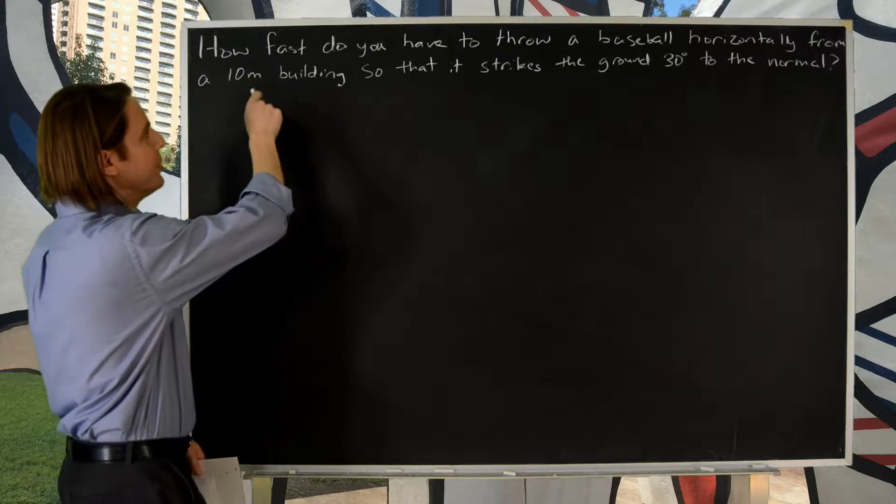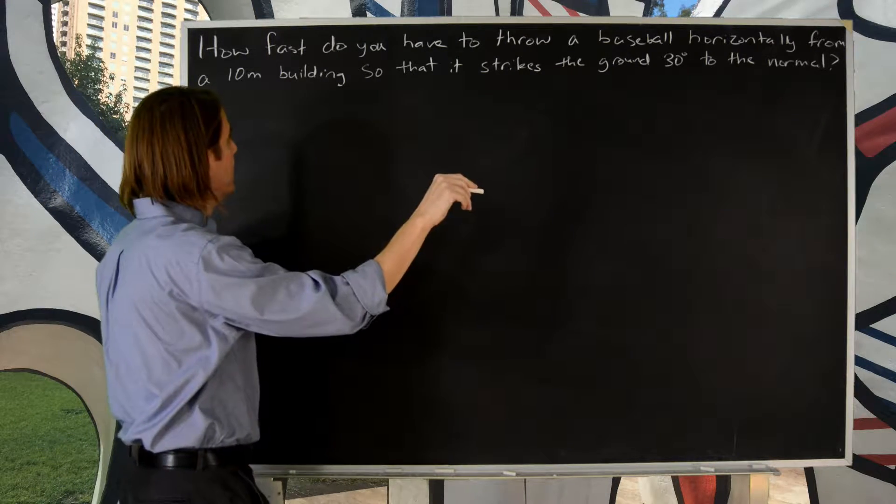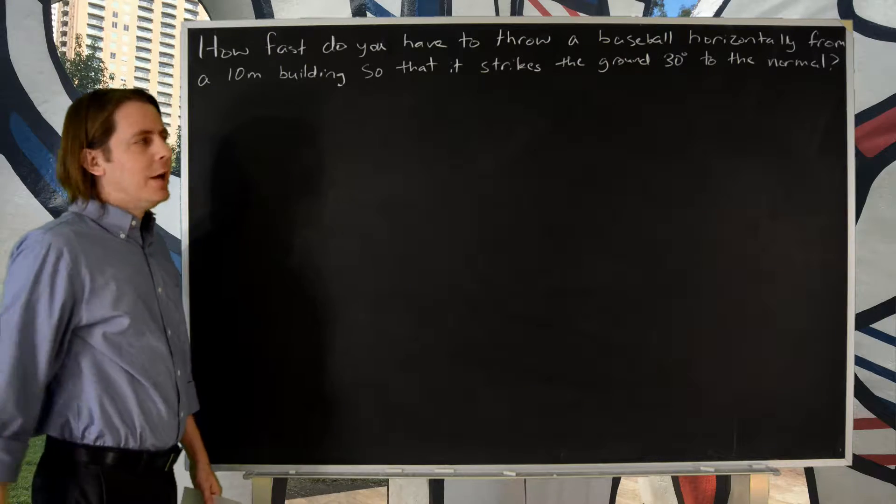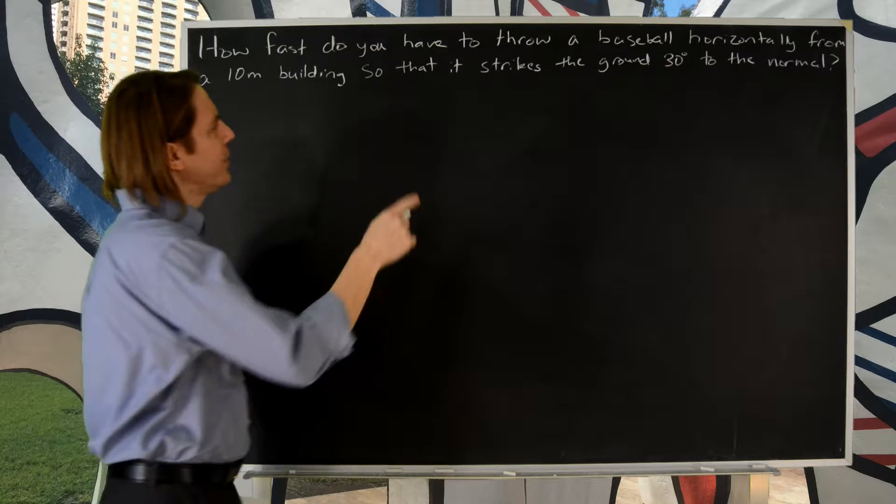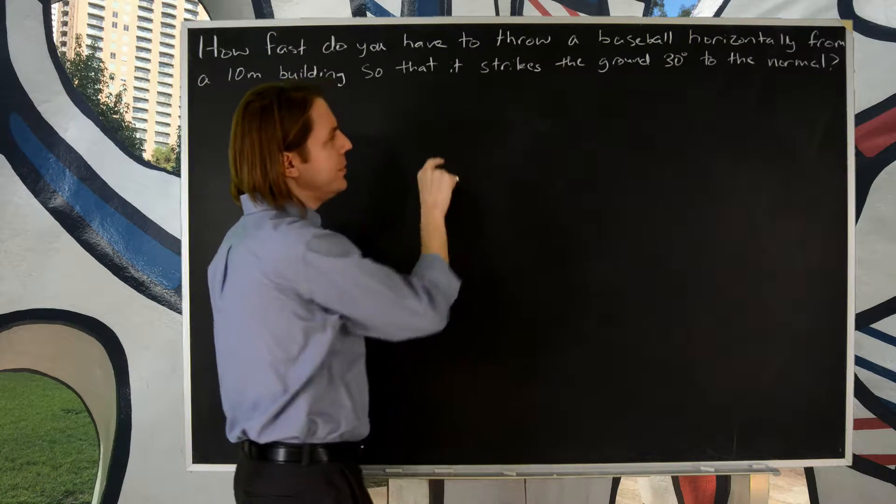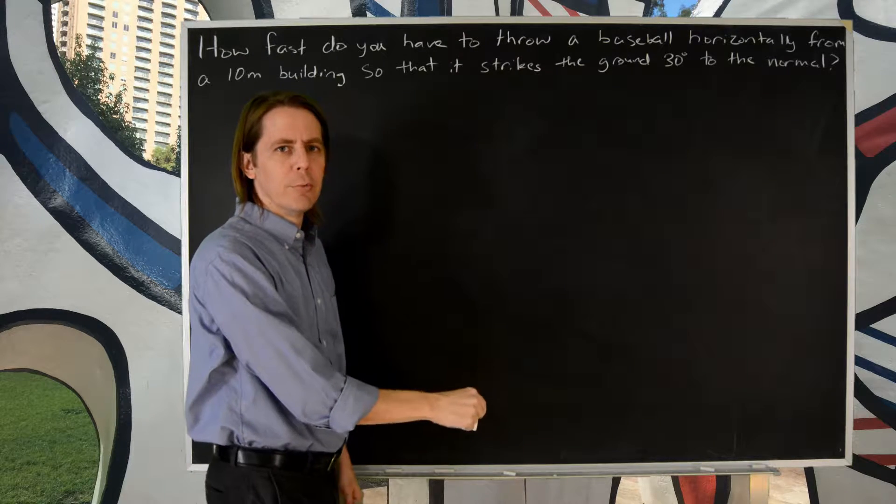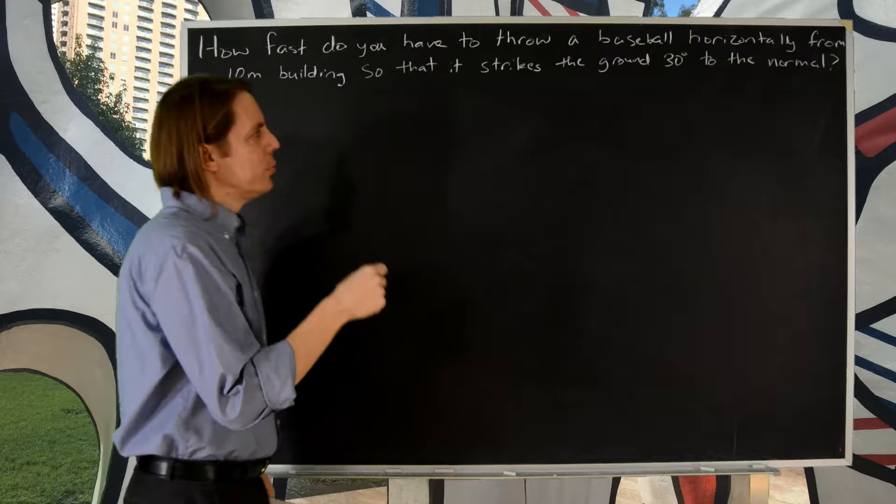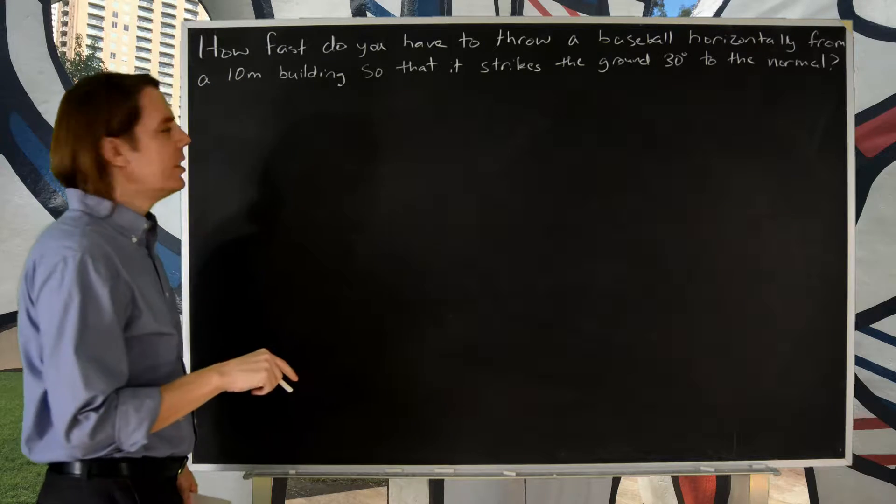This one looks like a kinematics problem. You throw a baseball horizontally from a 10 meter building, but then you're asked something a little bit different. You're asked what velocity do you throw it at so that it strikes the ground at 30 degrees to the normal. So I want to show you how to do problems where you're asked about the direction of the path.